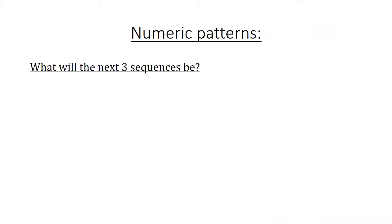What will the next three sequences be? The sequence goes 2 to the power of 2, 3 to the power of 2, 4 to the power of 2. It will be 5 to the power of 2, 6 to the power of 2, 7 to the power of 2.